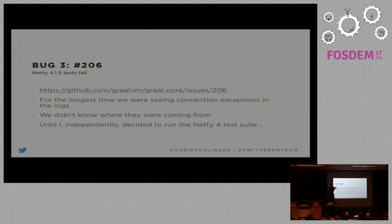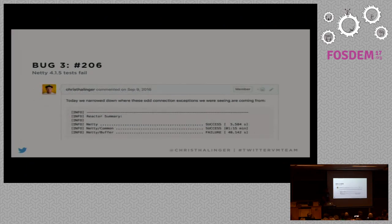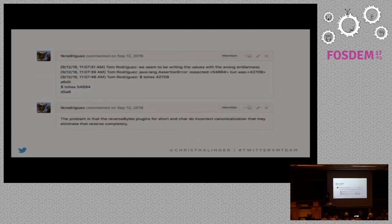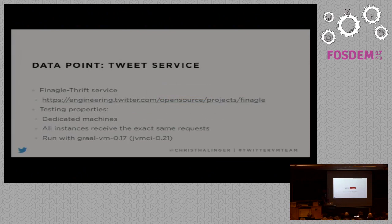This one was annoying too. We saw weird exceptions — tons and tons of IO exceptions — and I couldn't figure out why. I eventually ran the JDK 9.4 test suite when some services upgraded from 9.3 to 9.4, and got native buffer failures. It turned out reverse bytes didn't work. It was wrong from day one but only manifested in this particular case. Tom fixed it with a rather small fix. Those were the only two real bugs we found — everything else just worked fine.